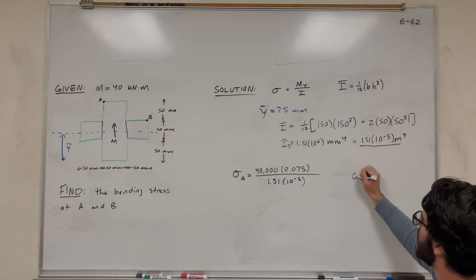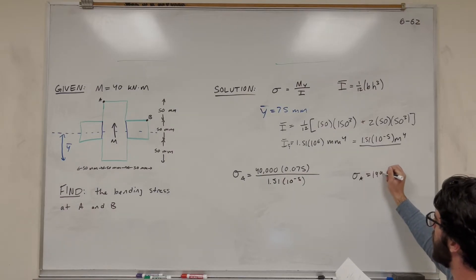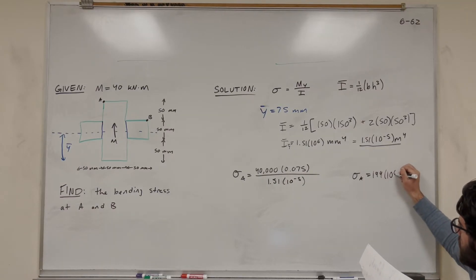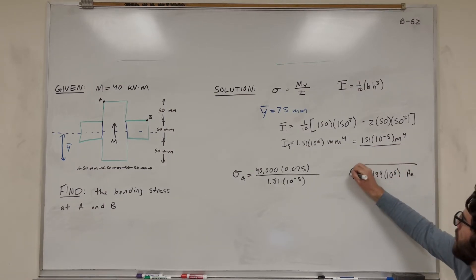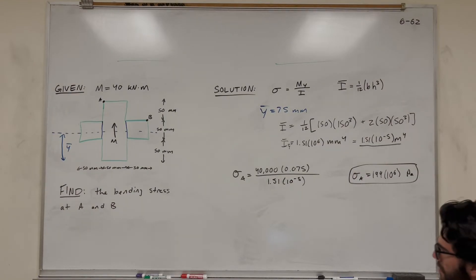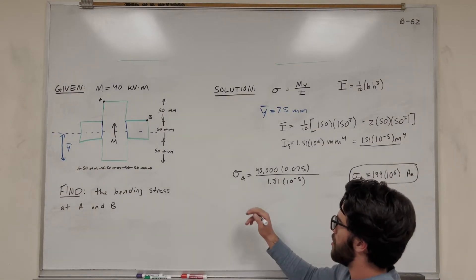So I'm going to get that bending stress at A is equal to 199 megapascals. I'm just going to write it like this, but it would be 199 megapascals.